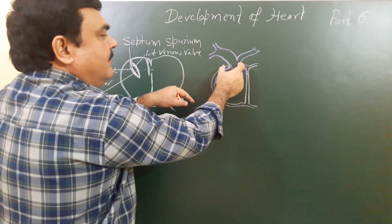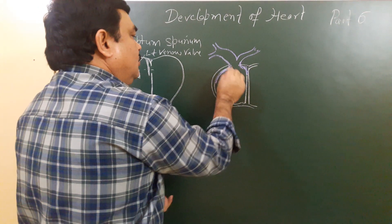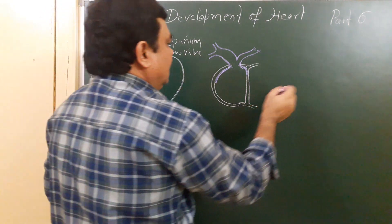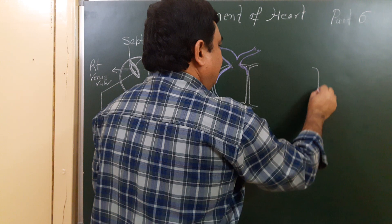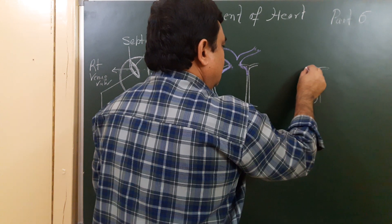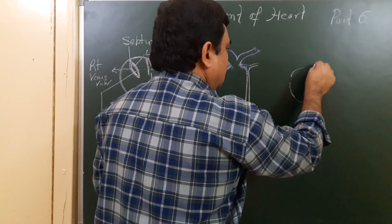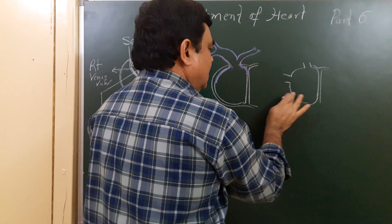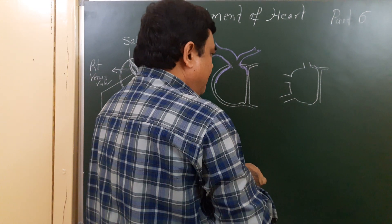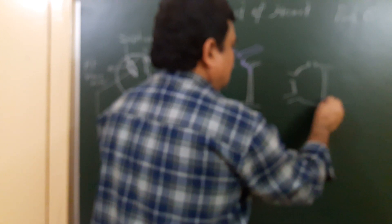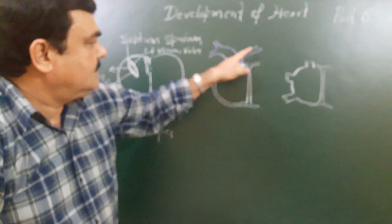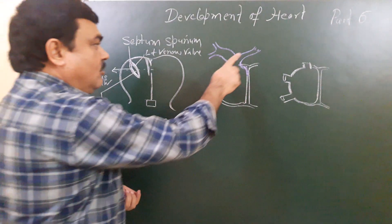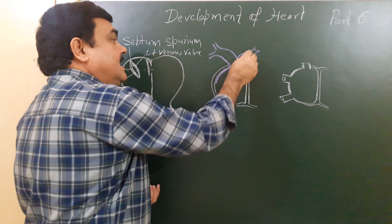These three openings are separately arranged into the right atrium. If you look at the diagram, here lies one opening — so these are three openings: one, two, three.